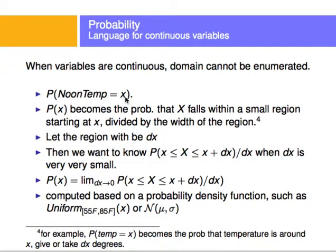Instead, what we do is we say, what's the probability of, when we say, what's the probability of the noon temperature being 35 degrees? What we're actually saying is what's the probability that it is in some range very close to 35 degrees?